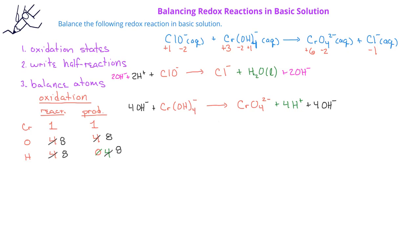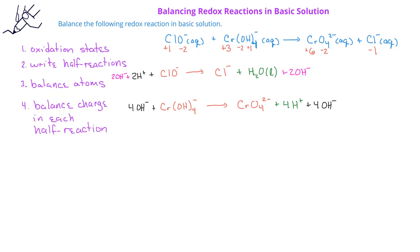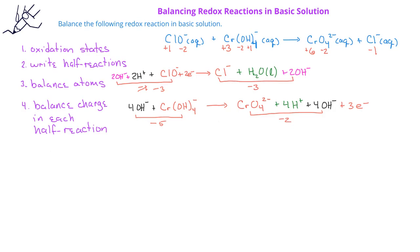Now that we've balanced the atoms in each half reaction, we have to balance each half reaction for charge. In the reduction half reaction, we have an overall charge of minus 1 on the reactant side and minus 3 on the product side, so we add two electrons to the reactant side. For the oxidation half reaction, we have an overall charge of minus 5 on the reactant side and minus 2 on the product side, so we add three electrons to the product side.